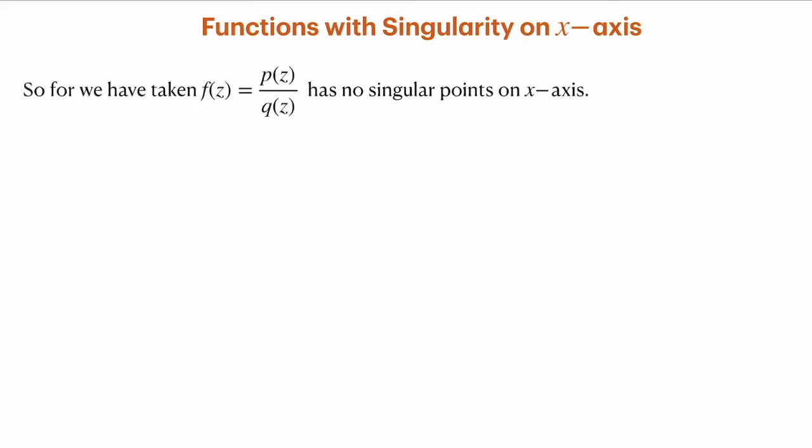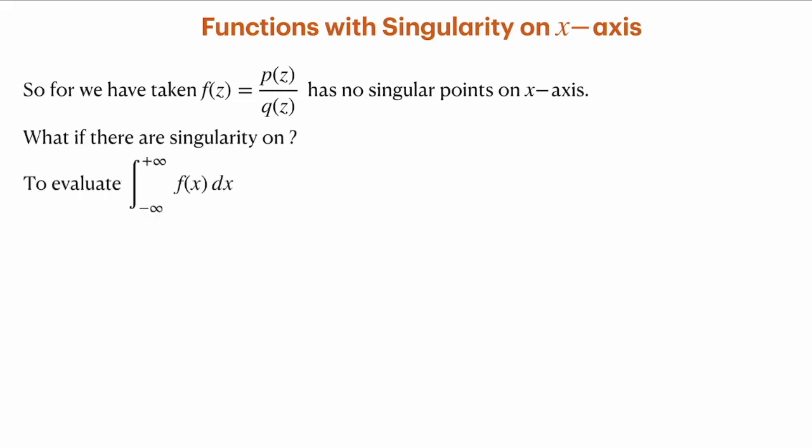So far we have evaluated integrals of real-valued functions which are continuous on the x-axis. That is, when we take the complex-valued function f(z) = p(z)/q(z), it has no singular point on the x-axis. How would this change if there are singularities on the x-axis? Let us look at this.